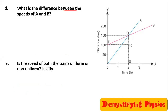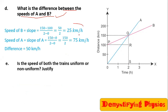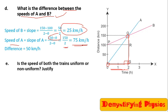What is the difference between the speeds of A and B? Speed of B is 25 kilometres per hour. Now find the slope of the blue line for train A. Take two points — the perpendicular is 150 minus 0 and the base is 2 minus 0. So 150 by 2 gives 75 kilometres per hour. Therefore, the difference is 75 minus 25, which is 50 kilometres per hour.